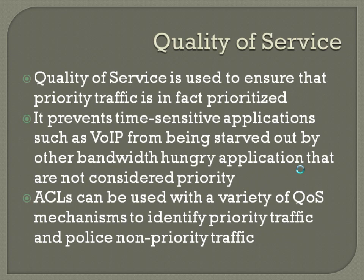For quality of service, QoS is used to ensure that priority traffic is prioritized. It prevents time-sensitive applications such as VoIP from being starved out by other bandwidth-hungry applications that are not considered priority. ACLs can be used with a variety of QoS mechanisms to identify priority traffic and police non-priority traffic. You really get into QoS deeply if you go into the CCNA voice track.